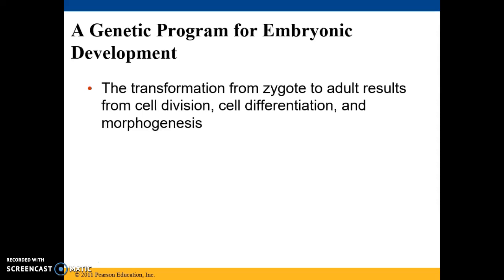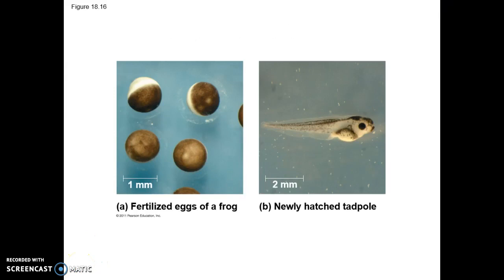There are three parts of this transformation: cell division, cell differentiation, and morphogenesis. It takes just four days for cell division, differentiation, and morphogenesis to transform each of the fertilized frog eggs shown here into a tadpole like the one shown.